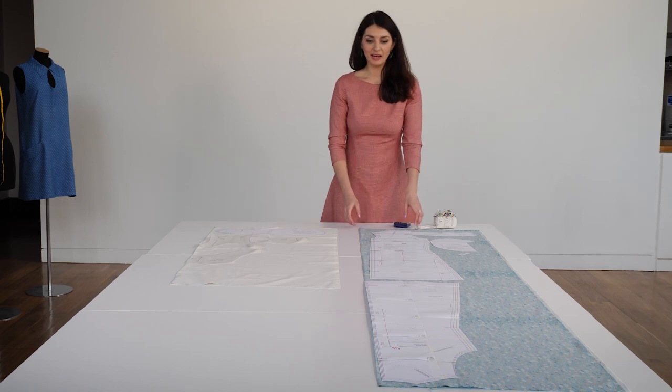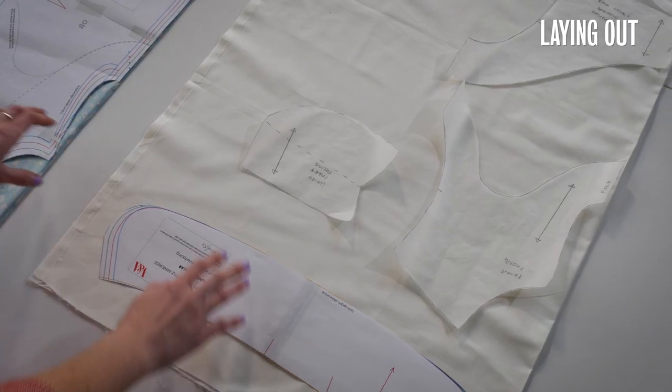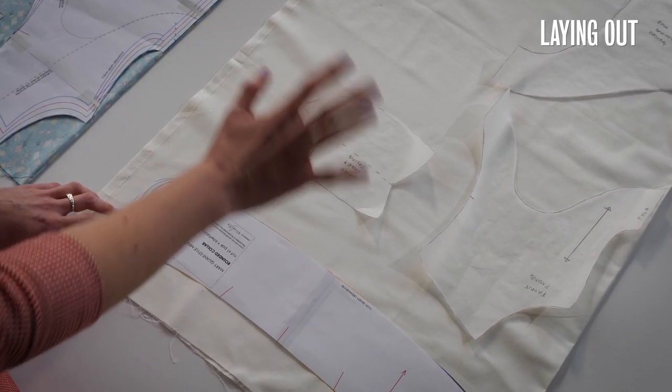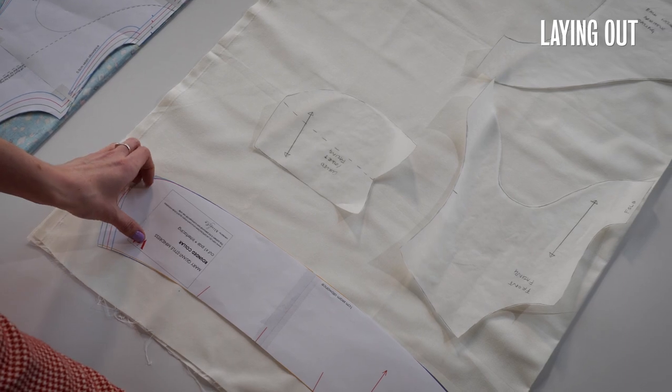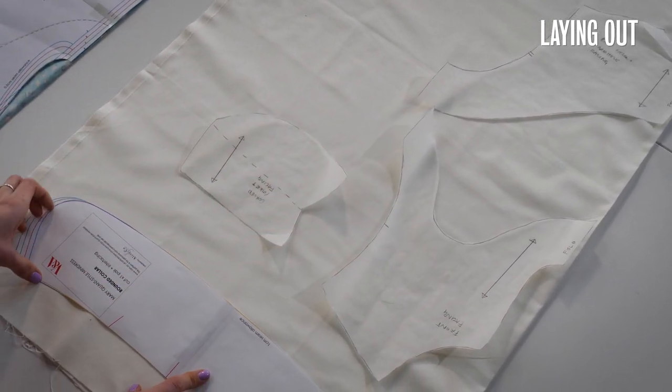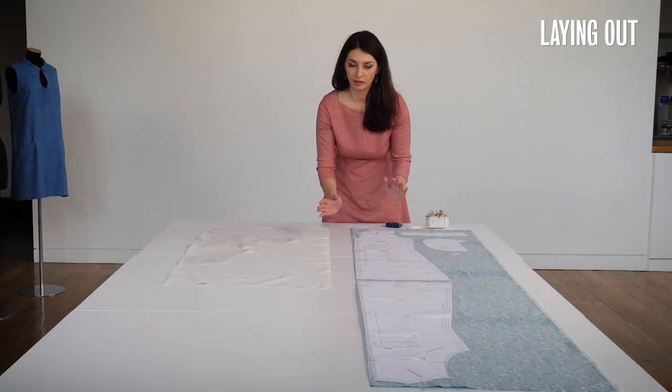Okay so now I have all my pattern pieces and it's time to lay them out on my fabric. I've got two different fabrics because I'm doing a contrast collar and facings. So these are my three facing pieces and my collar here. There is a lay plan in the instructions but according to the width of your fabric this may change.